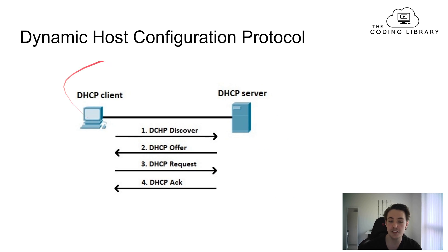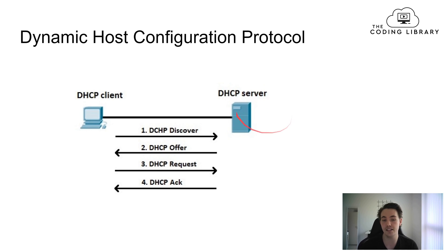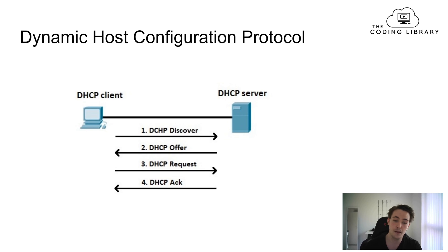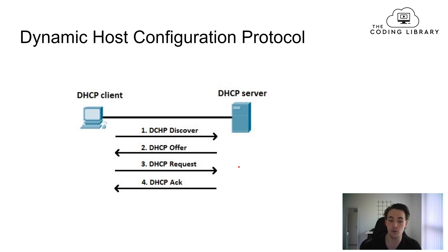We have a DHCP client and a DHCP server. If a computer wants to get an IP address, it first sends a DHCP Discover to request an IP address. The DHCP server, which contains the available IP addresses, then sends an Offer to the client. The client sends a Request for that specific IP address. If it's still available, the server sends an Acknowledgement back to the client, and the client has now gotten an IP address it can use on the internet.